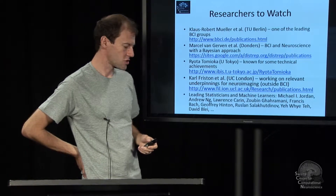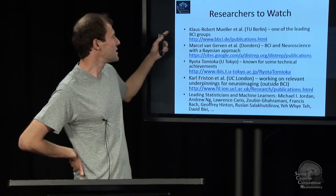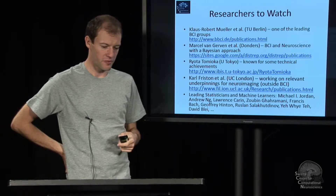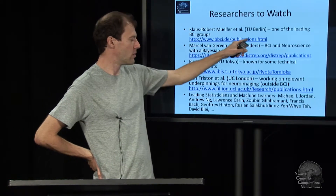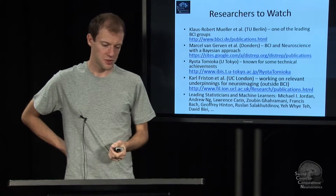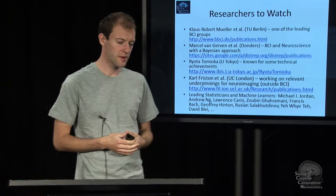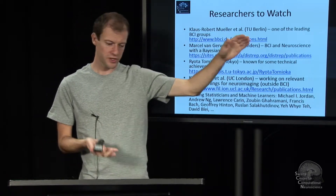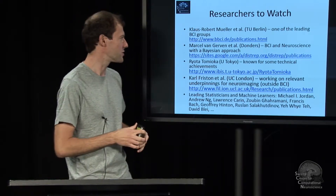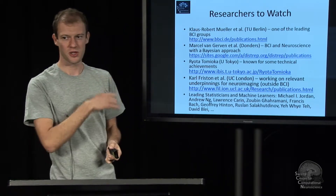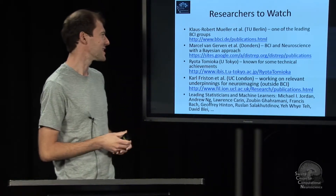To conclude, there are a few researchers one should definitely watch. There is the Berlin BCI group, basically the group of Klaus-Robert Miller. They have most of their papers online as PDFs and have been active since around 2000. Going through them chronologically is essentially a history of the cutting edge of BCI from 2000 to 2013, and reading all of that covers most of what is in this lecture.